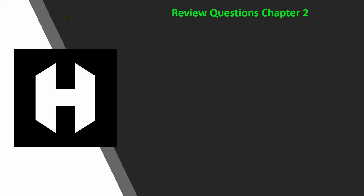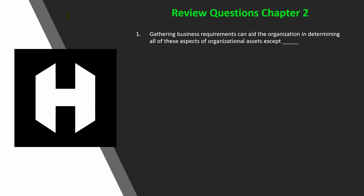Question 1: Gathering business requirements can aid the organization in determining all of these aspects of organizational assets except for: A) full inventory, B) usefulness, C) value, or D) criticality. If you said B, usefulness, you would be right. When gathering business requirements we need a complete inventory, accurate asset valuation from owners, and an assessment of criticality — but usefulness is not part of that.